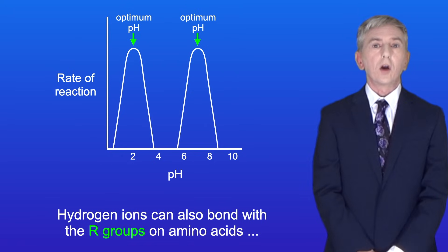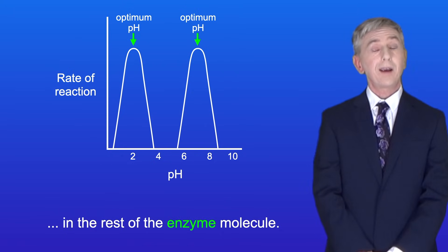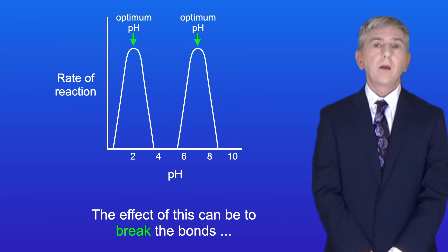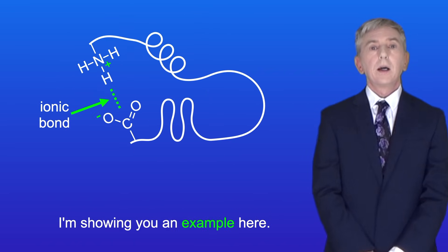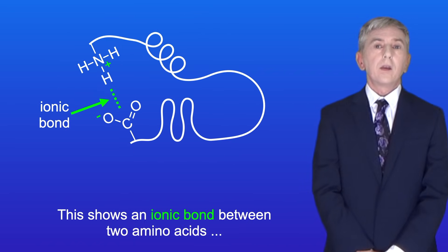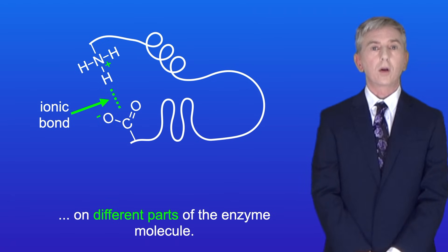Hydrogen ions can also bond with the R-groups on amino acids in the rest of the enzyme molecule, and the effect of this can be to break the bonds holding the tertiary structure of the enzyme in place. I'm showing an example here. This shows an ionic bond between two amino acids on different parts of the enzyme molecule.